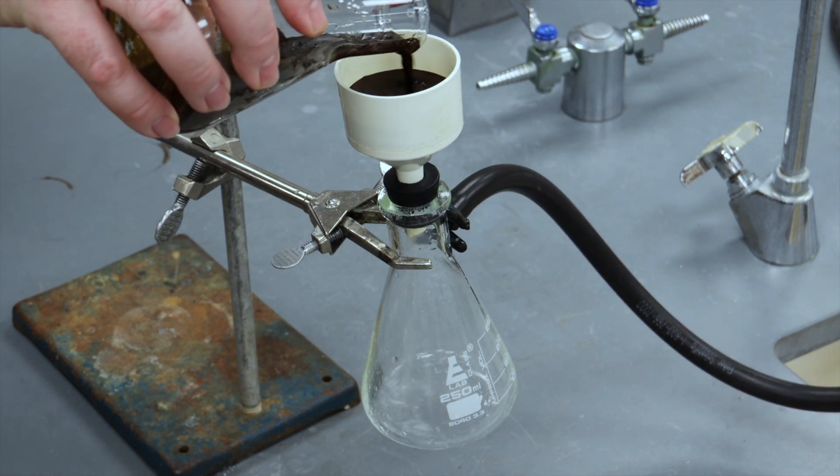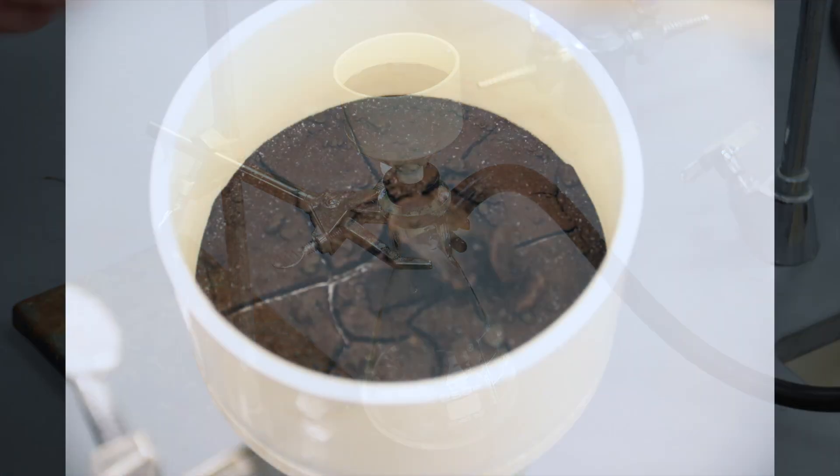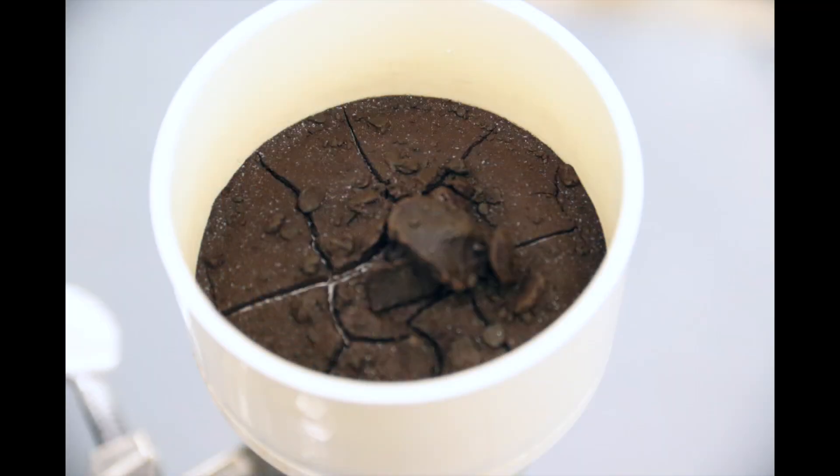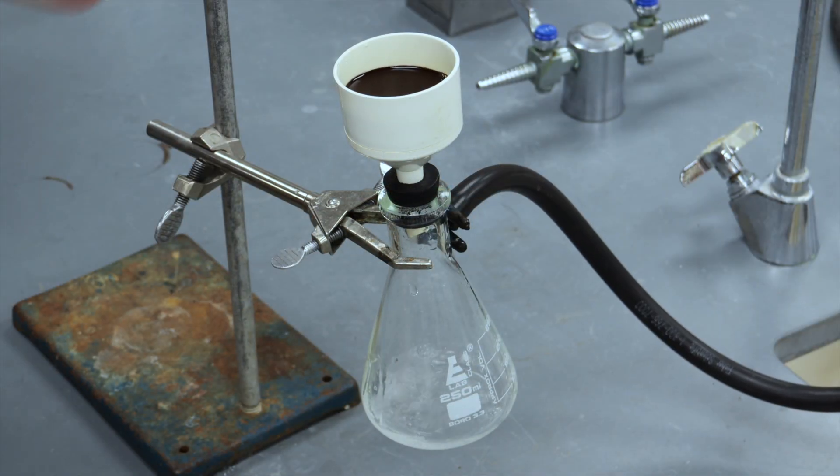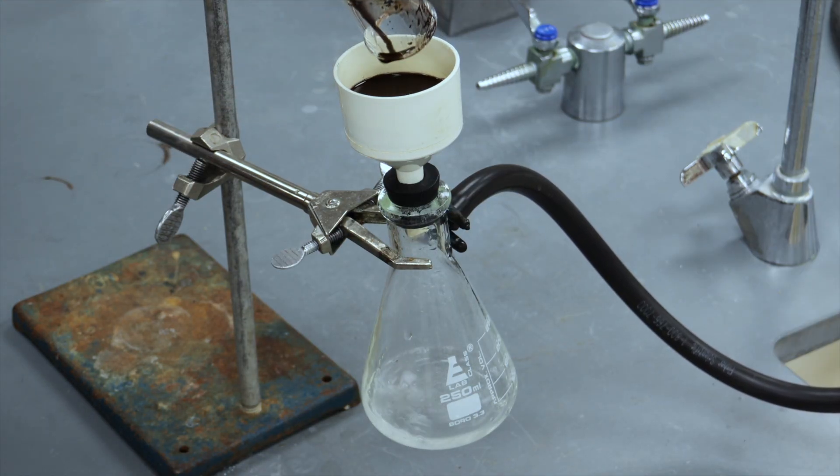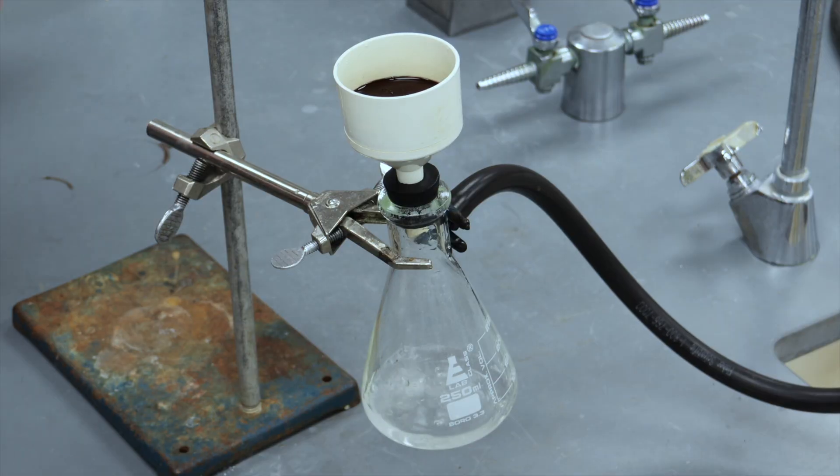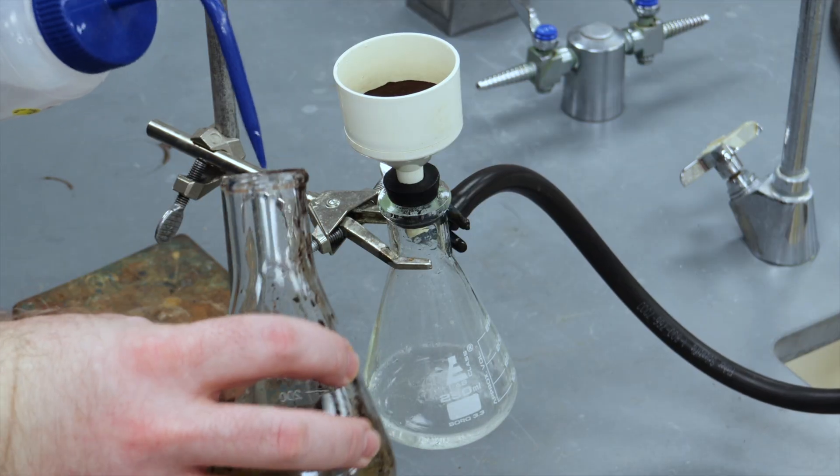Carefully pour your mixture through the Buechner funnel with filter aid in it. Pour slowly so that you don't damage the surface of your filter aid. Your filtrate should be clear, and in this case, colorless. You can wash the reaction mixture with more of your solvent, but you don't need to get all of the solid particles out of the flask. Your product should be dissolved in the filtrate.